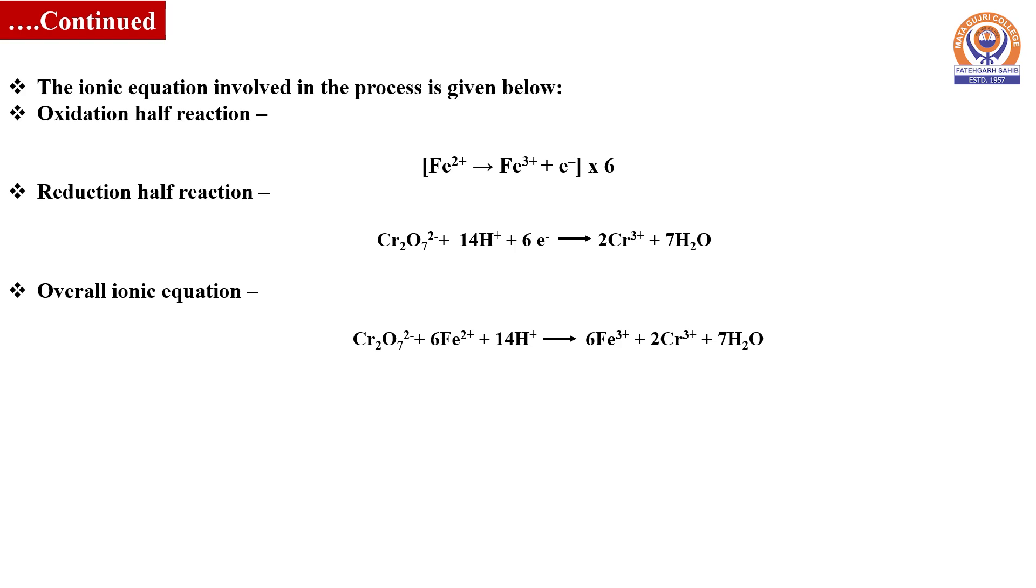The overall ionic equation can be written as dichromate ions plus six ferrous ions plus 14 H⁺ ions getting converted into six moles of Fe³⁺ and two moles of chromium 3 with the removal of seven molecules of water.